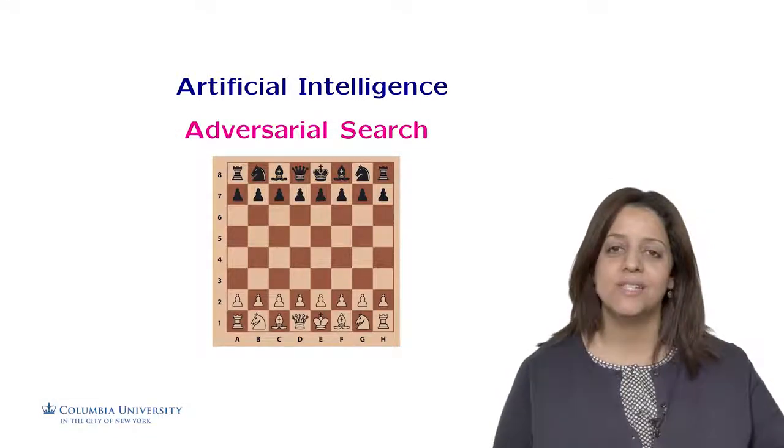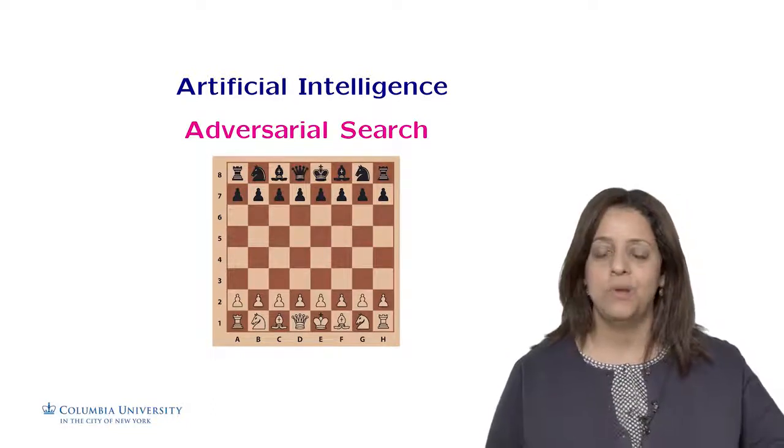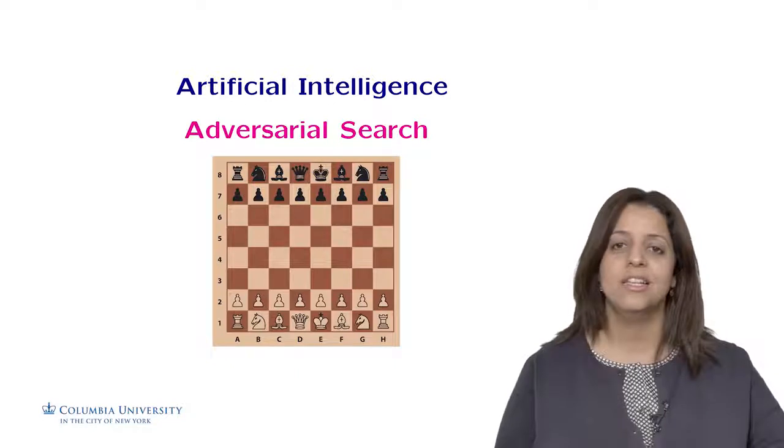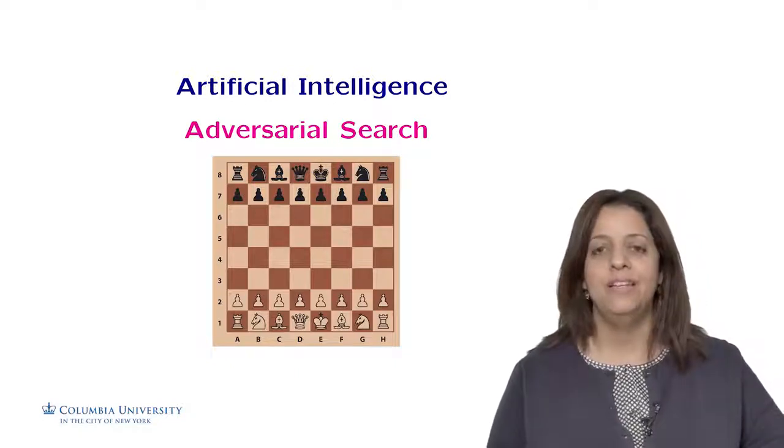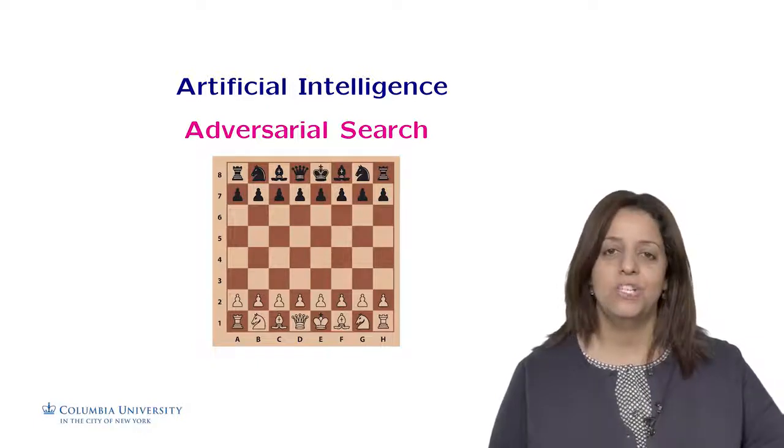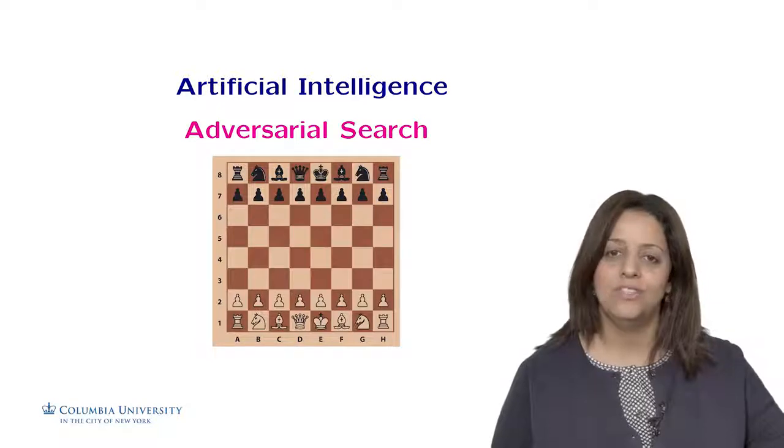Hi everyone. In the previous lecture, we discussed search agents or planning agents that aim to find a solution to a problem. This solution is often expressed as a sequence of actions, for example, to go from city A to city B. In this lecture, we discuss another kind of search that's as important in artificial intelligence, called adversarial search.